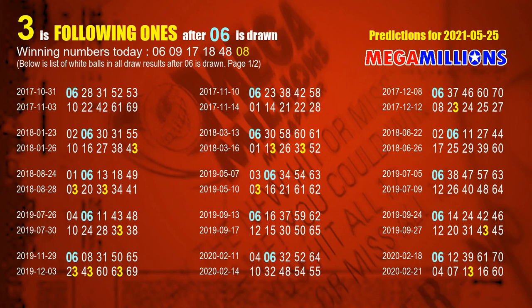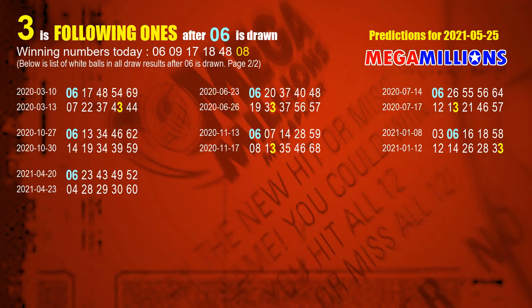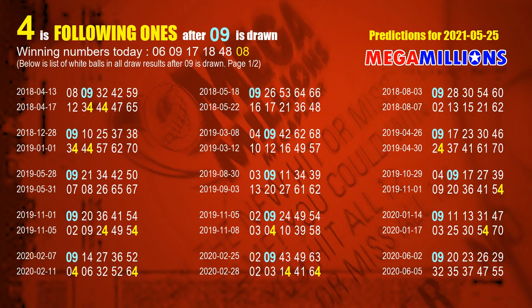We list all draw results which come after a draw with 06 as a white ball winning number. The most frequently following units digit is 3 when 06 is the winning number in the last draw — we have already highlighted units digit 3 in yellow for you. The second white ball is 09; the most frequently following units digit is 4 when 09 is the winning number in the last draw.